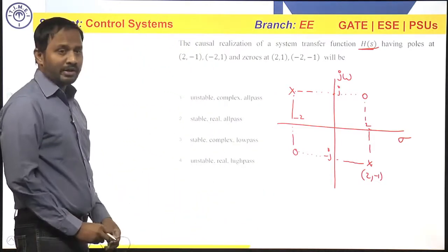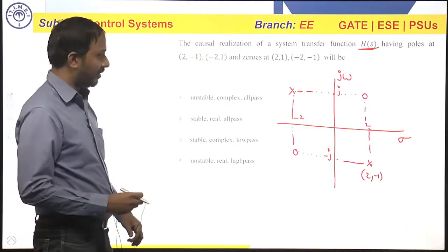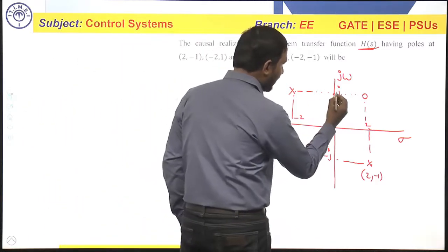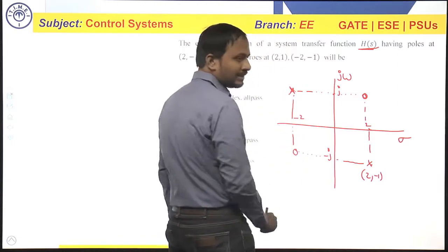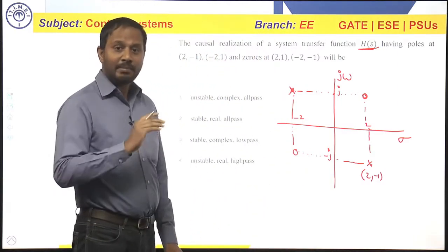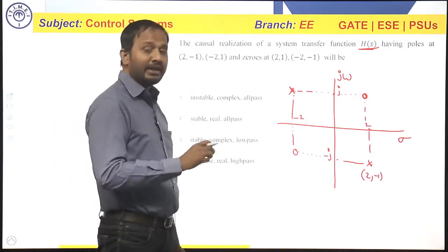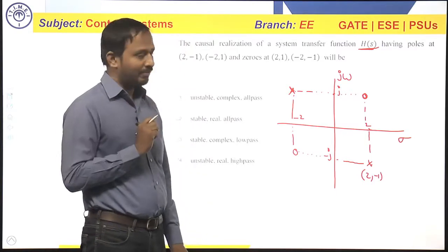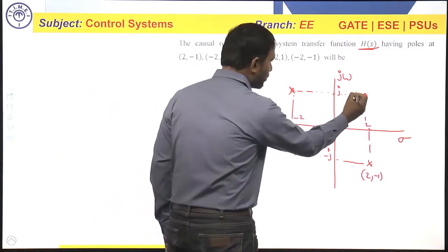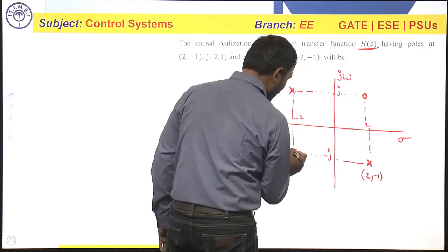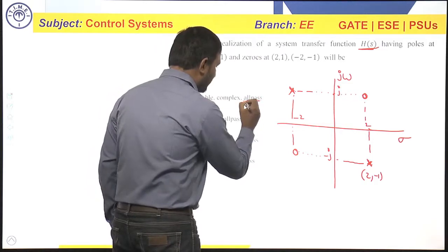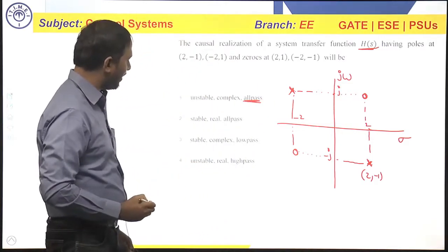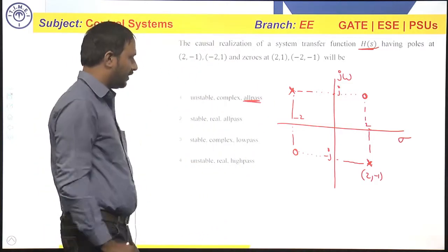Now, if you observe this pole zero plot for a continuous time system, these zeros and poles are mirror images. If poles and zeros are mirror image for a continuous time system, it represents an all pass system. So, this corresponds to an all pass filter. Here, poles and zeros are mirror image, so this corresponds to all pass system. So, your answer can be option 1 or option 2.